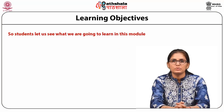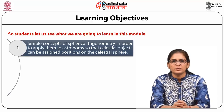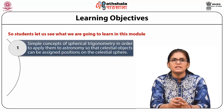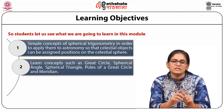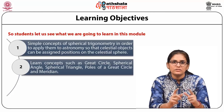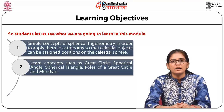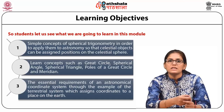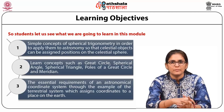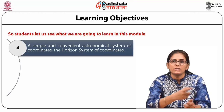After completing this module, students will be able to understand the simple concepts of spherical trigonometry and apply them to astronomy so that celestial objects can be assigned positions on the celestial sphere. We will learn concepts such as the great circle, spherical angles, spherical triangles, poles of great circles, and meridian. We will also understand the essential requirements of an astronomical coordinate system and the horizon coordinate system.